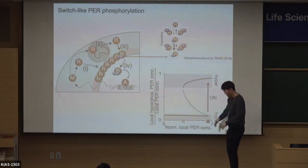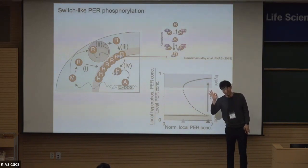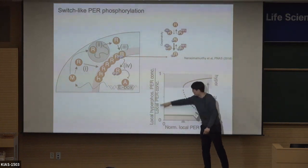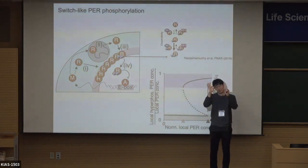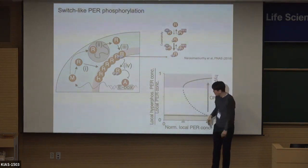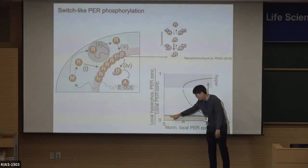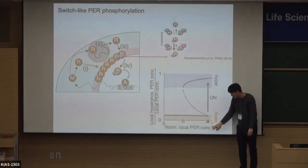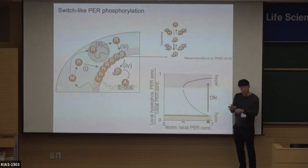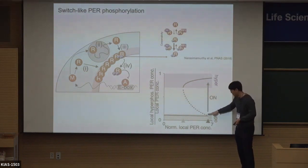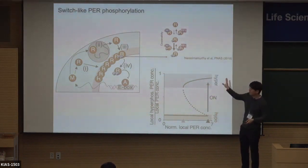What I mean by the switch: imagine a small circle within the cell where we measure the local concentration of period protein. The x-axis is local concentration in this small circle; the y-axis is the fraction of period protein that is phosphorylated. We found that when local concentration is low, the majority remain unphosphorylated. But when local concentration passes a certain threshold, suddenly all the unphosphorylated proteins switch to the fully phosphorylated status. We call this a phospho-switch — an off/on of phosphorylation.